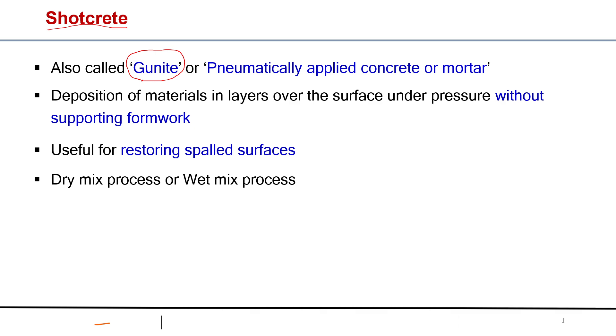In short, this method is pneumatically applied concrete or mortar. Pneumatically means using compressed air we apply the concrete or mortar. So this is the simple definition of shotcrete or gunite.